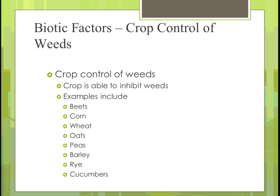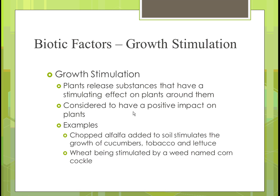For crop control of weeds, you put in a crop that will inhibit the weeds. You can do intercropping — planting between rows of crops in a small enough area. Examples include beets, corn, peas, and cucumbers. You could also plant a whole crop such as corn, wheat, oats, and barley to control weeds based on how they grow. Some of those crops get high enough — wheat and barley grow close together and choke out the weeds, and corn eventually gets tall enough to choke out weeds as well.